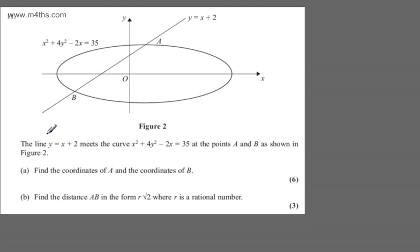This is question number 11. We're told the line y equals x plus 2 meets the curve x squared plus 4y squared minus 2x equals 35 at the points A and B as shown in figure 2.